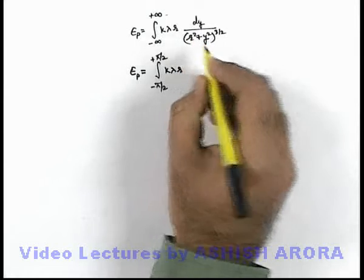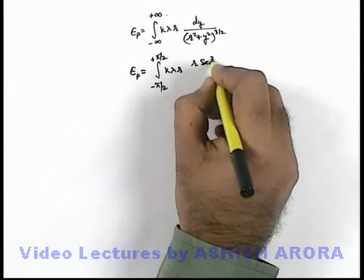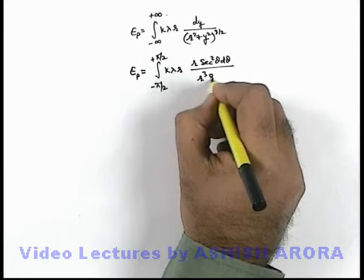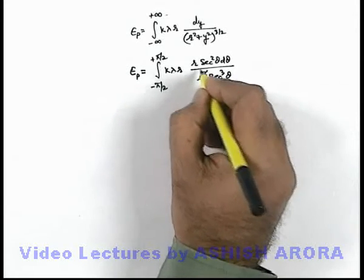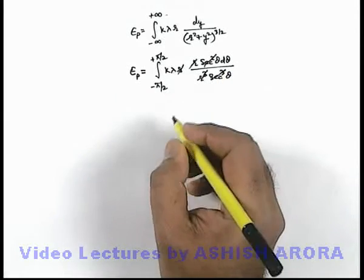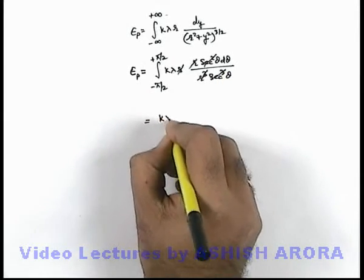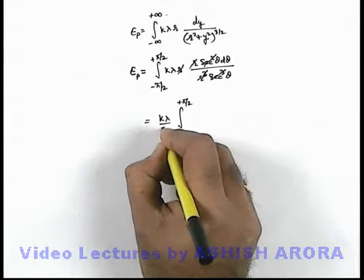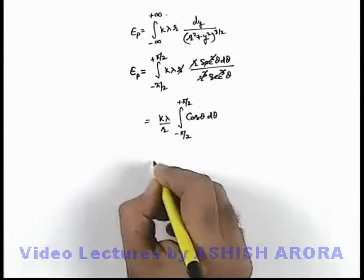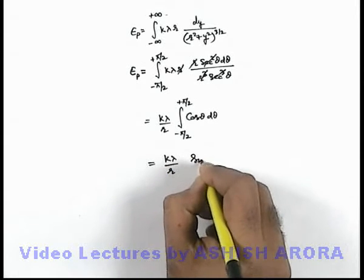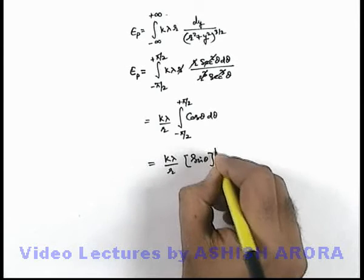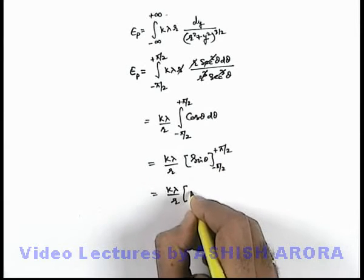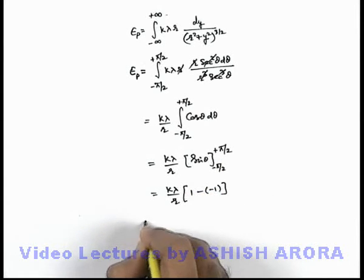Changing the limits from minus π/2 to plus π/2 and substituting, we get k·lambda times r·sec²θ·dθ in the numerator, and substituting y as r·tanθ in the denominator gives r³·sec³θ. The r² and sec² terms cancel, leaving the integral of cosθ·dθ. Integrating cosθ gives sinθ evaluated from minus π/2 to plus π/2, which gives k·lambda over r times (1 minus (−1)).